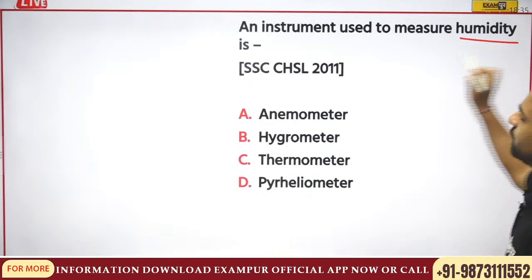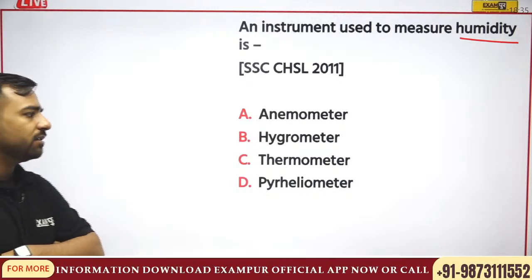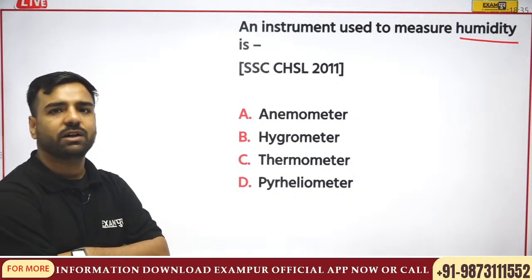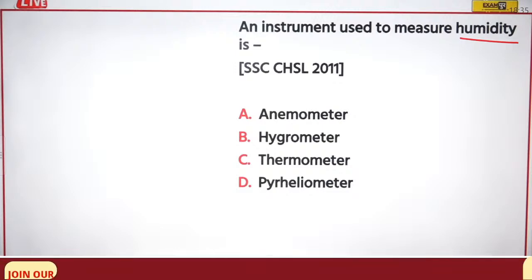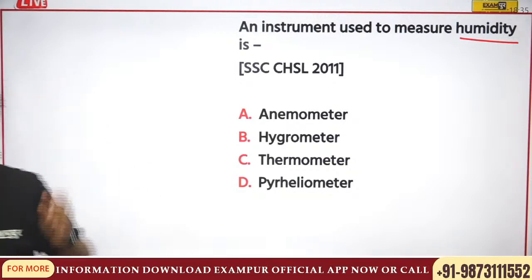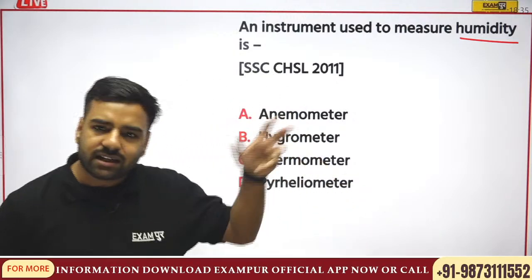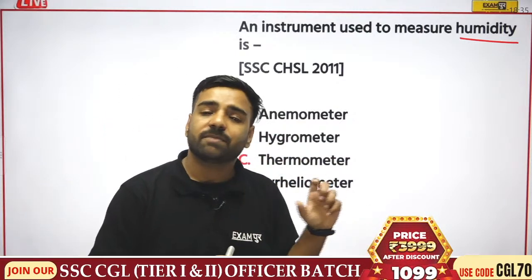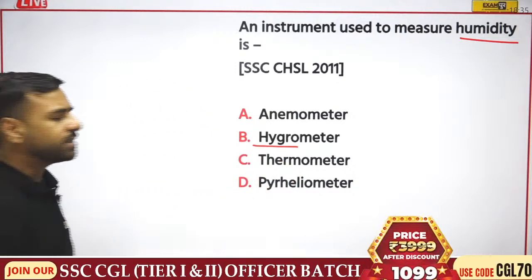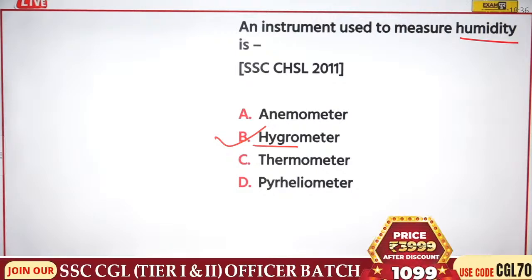From CHSL 2011: the instrument used to measure humidity is what? Options are anemometer, hygrometer, thermometer, or pyrheliometer. After rainfall in many parts of India there is humidity. The instrument measuring humidity is a hygrometer — option B is correct. Please remember the instrument for measuring humidity is hygrometer.